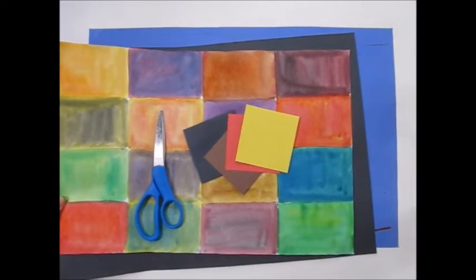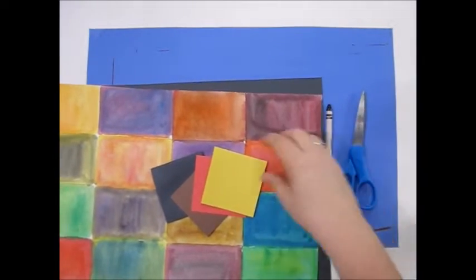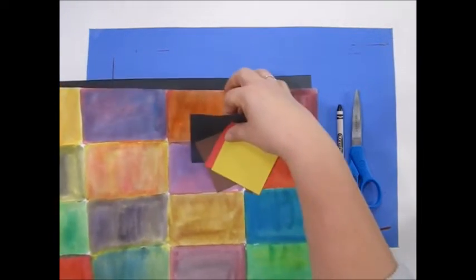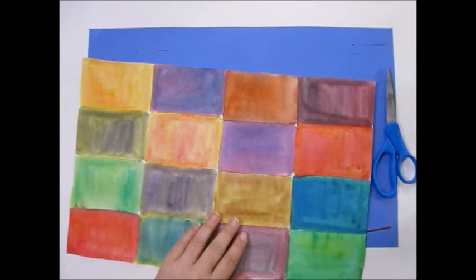Let's make the castle. So you'll need scissors, a black crayon, and the painted piece of paper. Right now it just looks like our experiment.